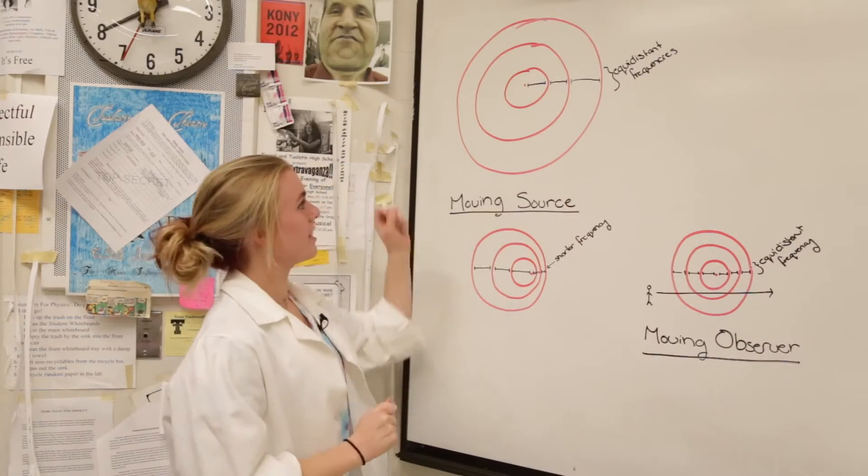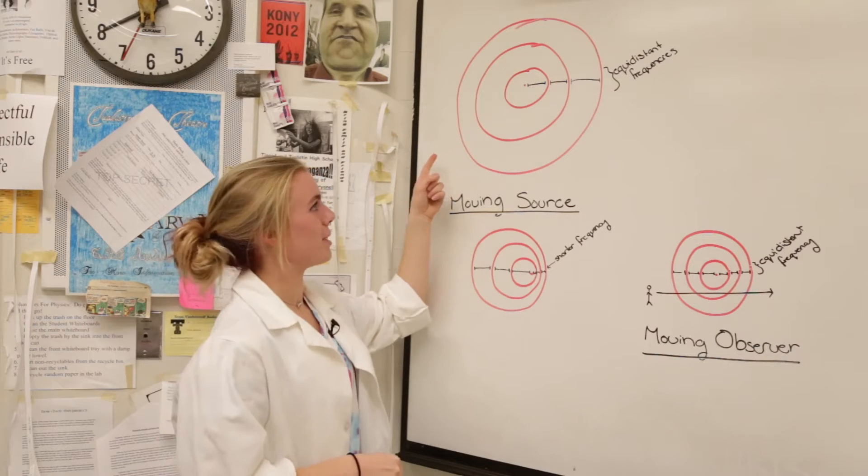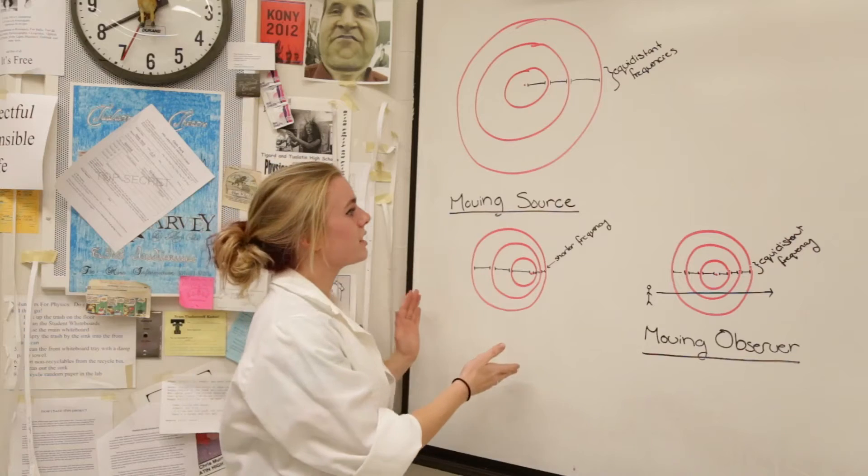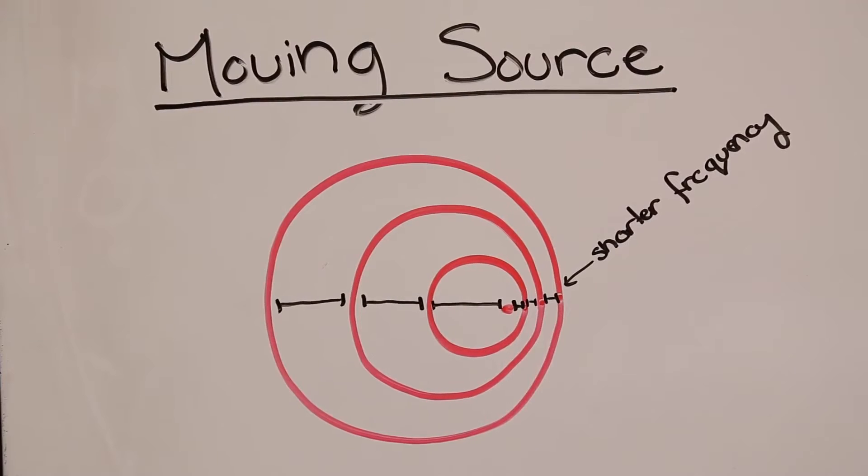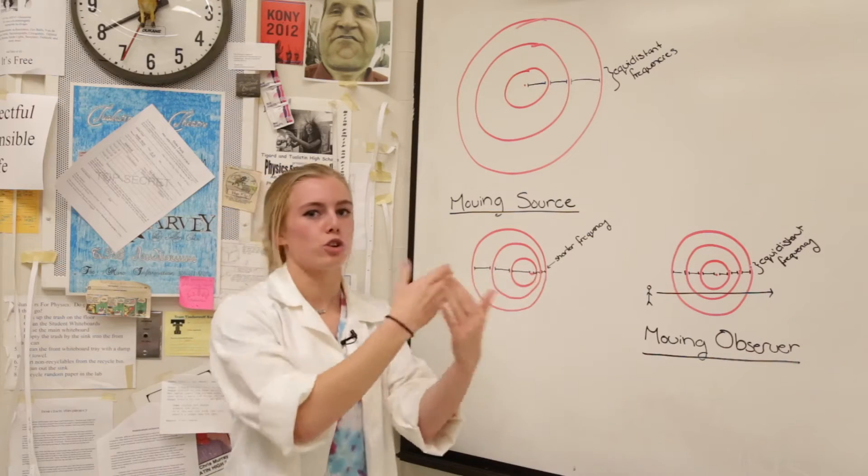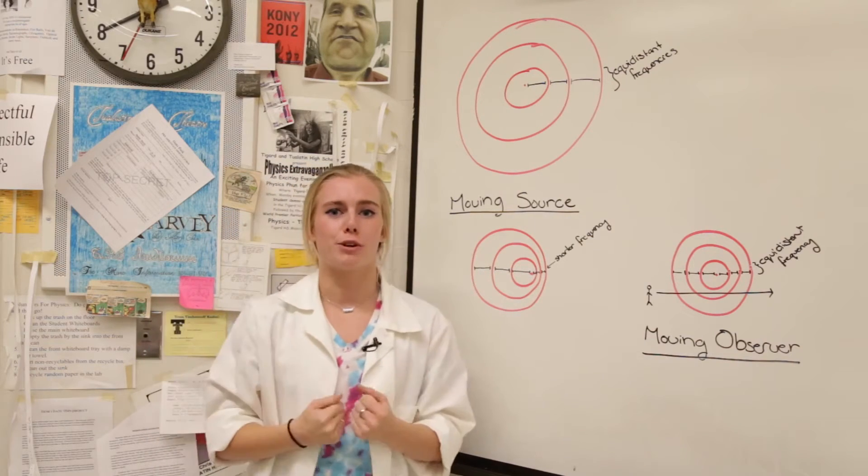Okay, so this is a stationary wave. The wavelengths in between are all the same. This is a moving source. Moving source means that something is moving while emitting the sound. Because it is moving, there will be shorter frequencies in the front and longer frequencies in the back.